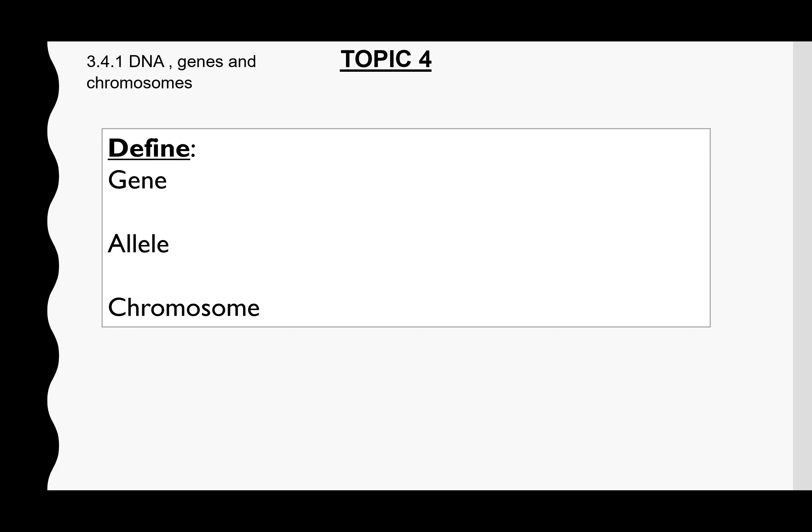We can start straight off with some questions to see what you can remember from GCSE. So definitions for gene and allele. For chromosomes, not so much a definition — more a description, or you might want to do a diagram to demonstrate what a chromosome is. Pause at this stage and when you've had a go, carry on in the video.